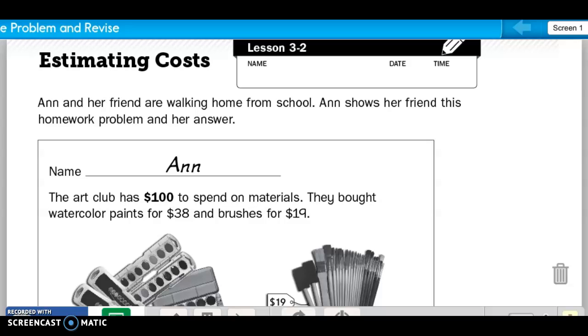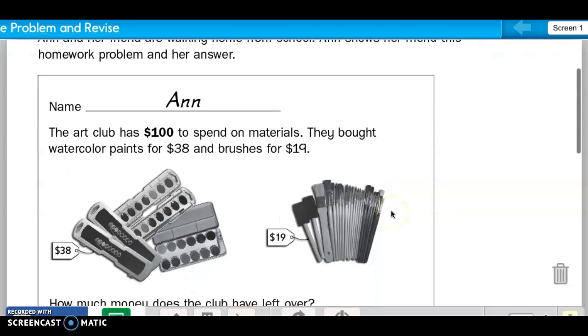The problem that you were supposed to do yesterday was about estimating costs. This is what it says. Anna and her friend are walking home from school. Ann shows her friend this homework problem and her answer. So Ann already did it, and we have to decide if Ann did it right.